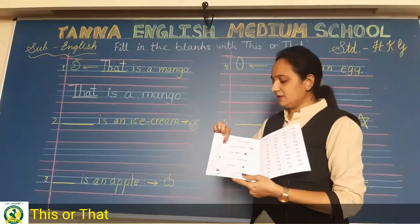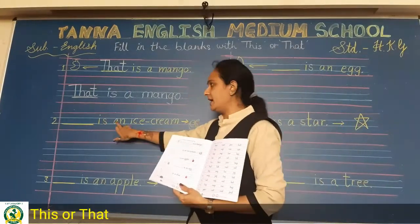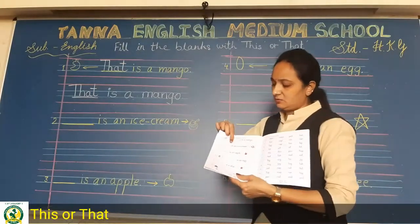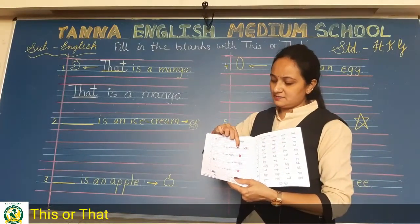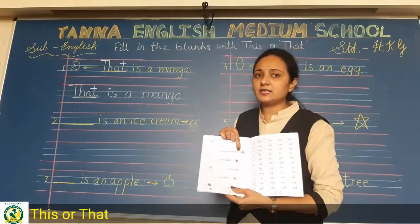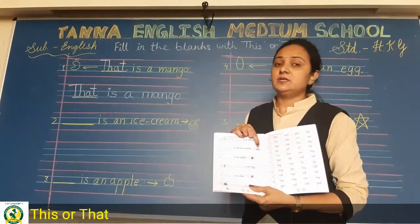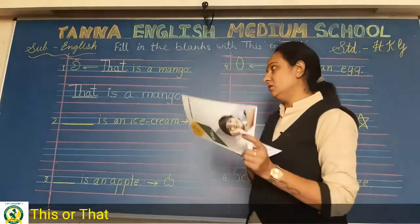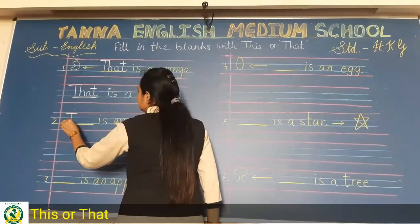Now the second one: dash is an ice cream. Here the arrow for ice cream is a short arrow — a small arrow — which means it is near. So we will write 'this'. T-H-I-S, this.